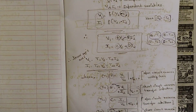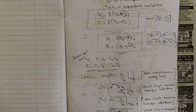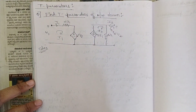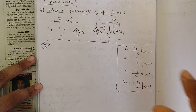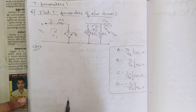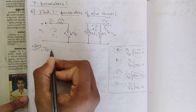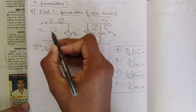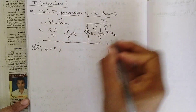In this video I am going to solve only one problem for T parameters, and the next video will cover the interrelationship between parameters. So let us apply the definitions and solve this problem. This is the circuit and we need to find the T parameters. First condition: let us take I2 = 0 and find the values of A and C. When I2 = 0, no changes occur in the circuit since we have loops rather than current sources.